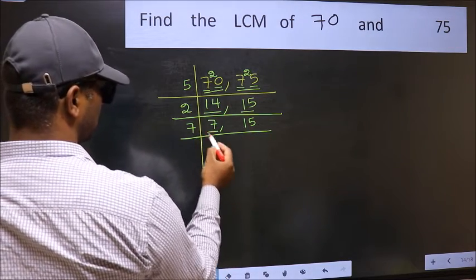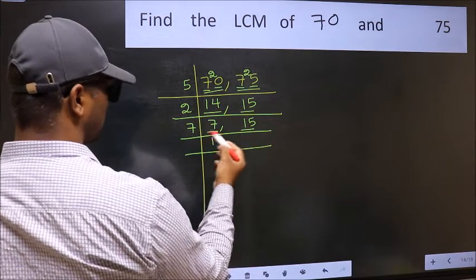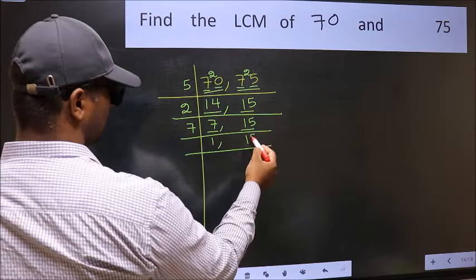Now here we have 7. 7 is a prime number so 7 once 7. The other number 15 is not divisible by 7 so you write it down as it is.